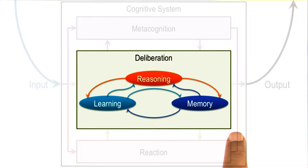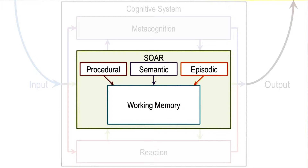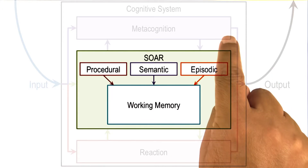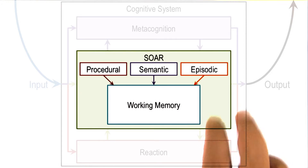We have come across the high level architecture for deliberation earlier. Today we will talk about a specific cognitive architecture for deliberation. This architecture is called SOAR. SOAR not only covers deliberation — it can also cover certain aspects of reaction and some aspects of meta cognition. But we are going to focus mostly on the deliberation component of SOAR.